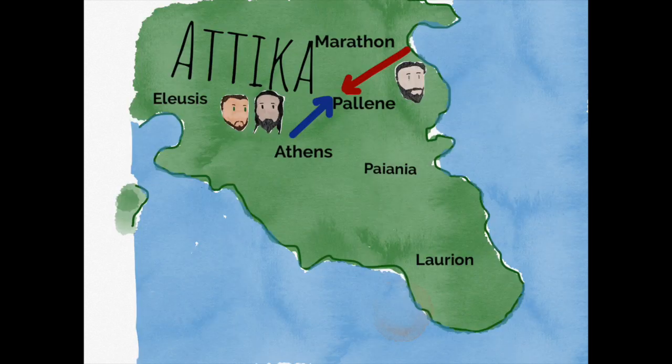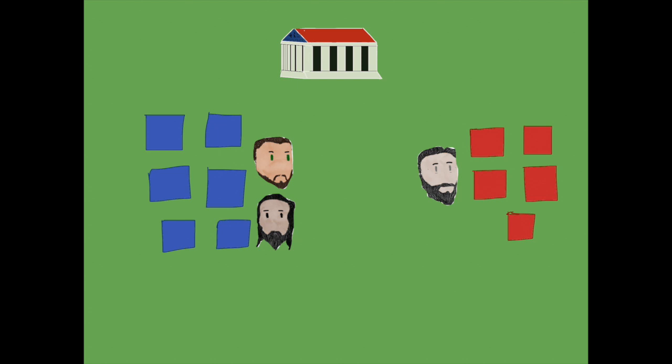But either way, around the time Pisistratus starts making inland for Marathon, the oligarchs in Athens start making moves to stop him. They manage to intercept him within sight of the temple of Athena at Pelene. The two armies then encamped, and in sight of the statue of the goddess that they believed ruled their city, prepared to fight for it.